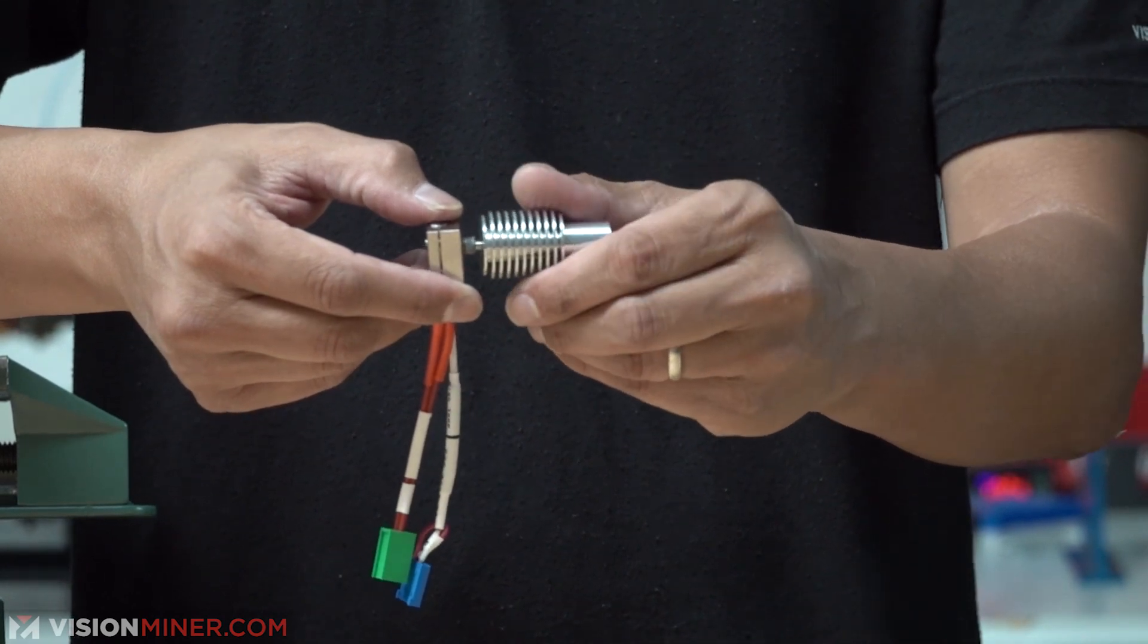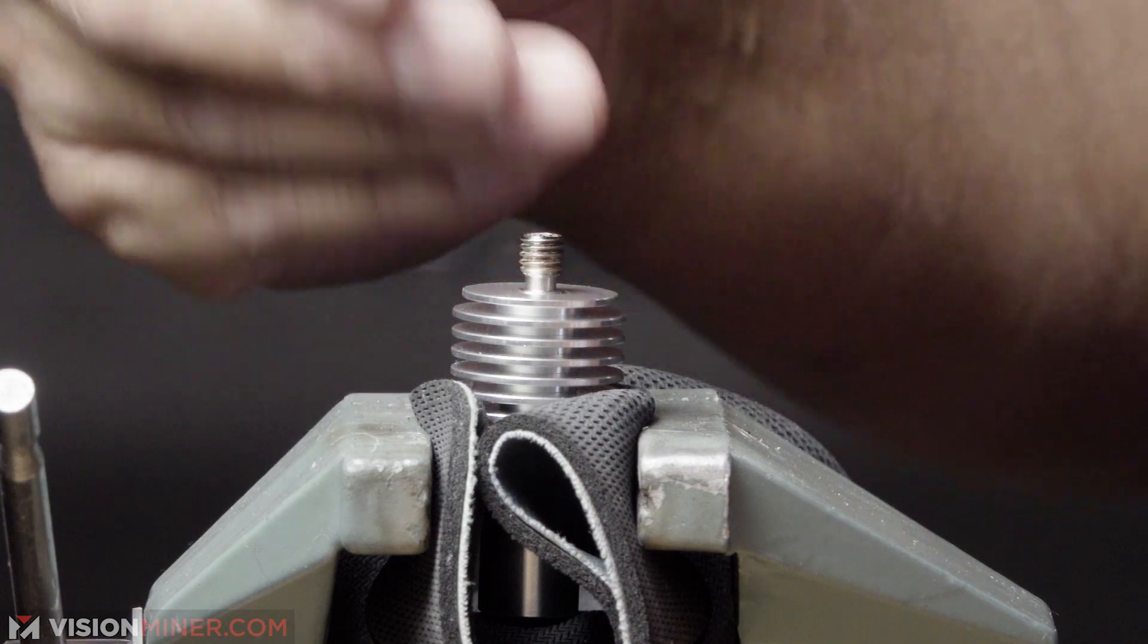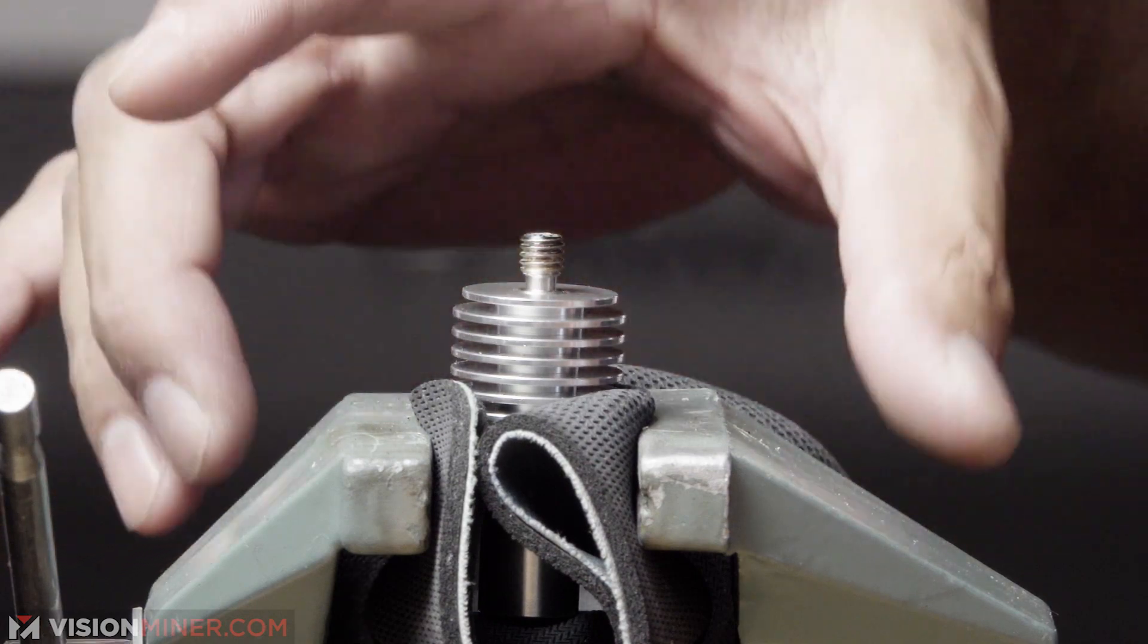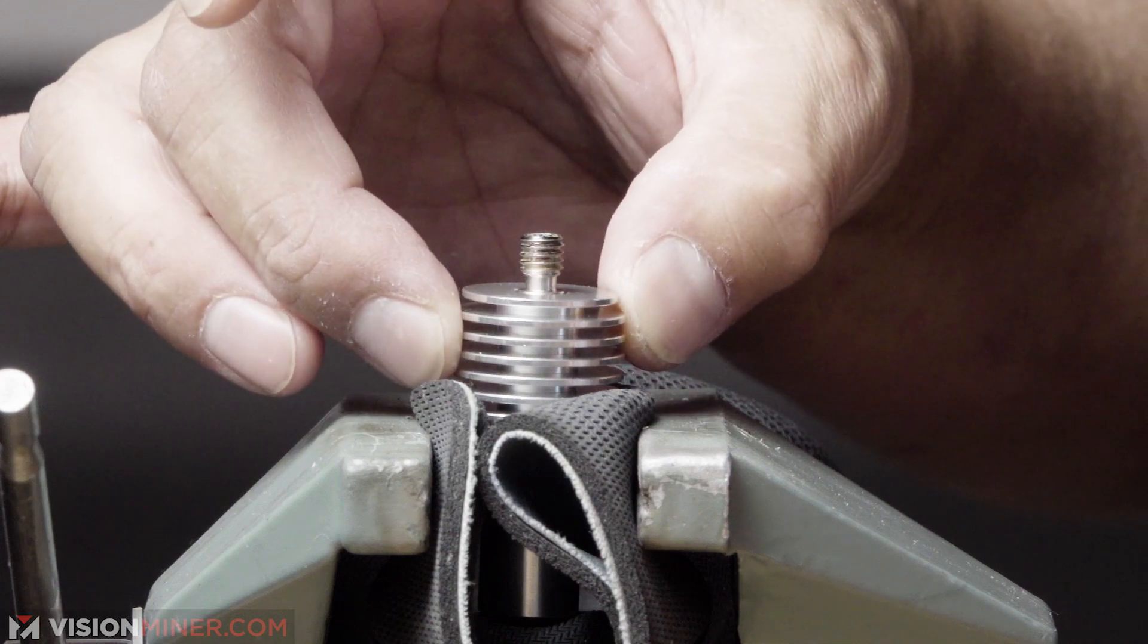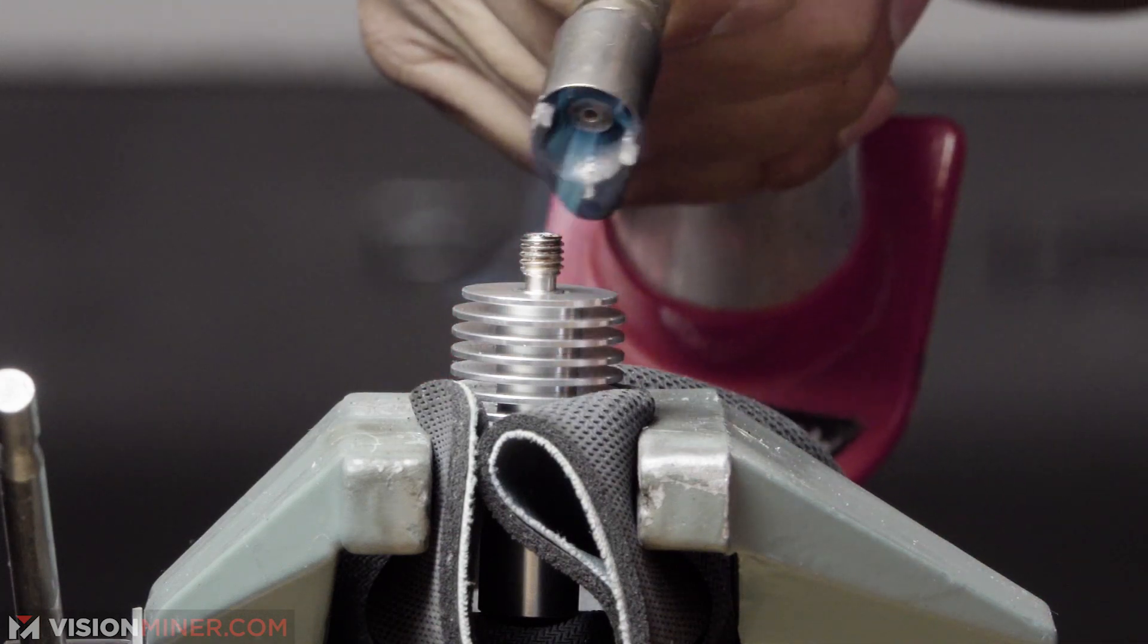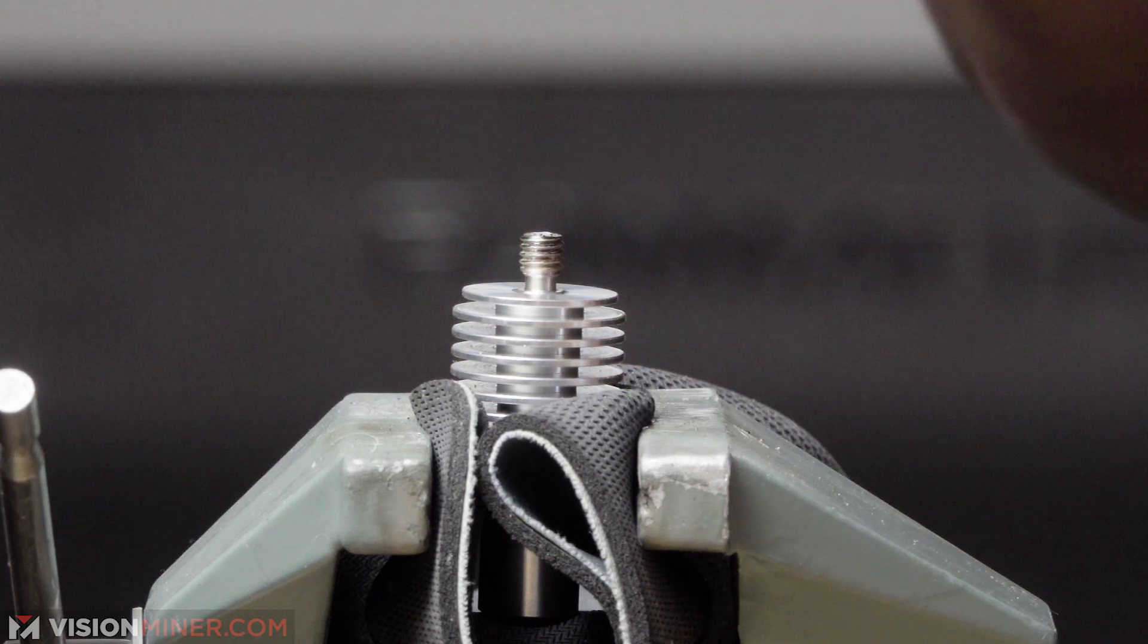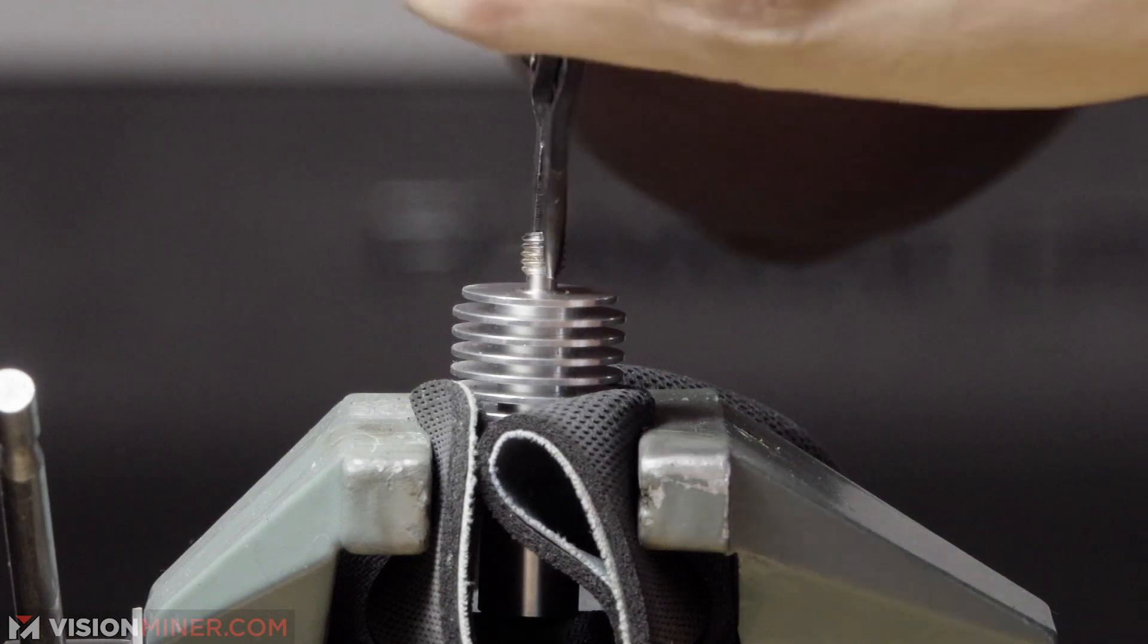So hand comes off. If you're having a problem taking off the heat break from the body, I do put in a vise. I like to put something around it so you won't scratch the body. Sometimes you do have to hit it with a torch, just lightly on the outside, and then use a needle nose to take off the heat break.